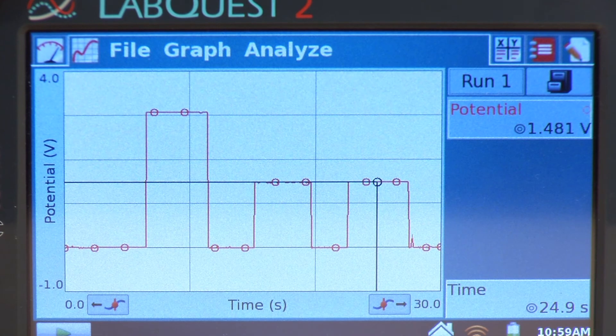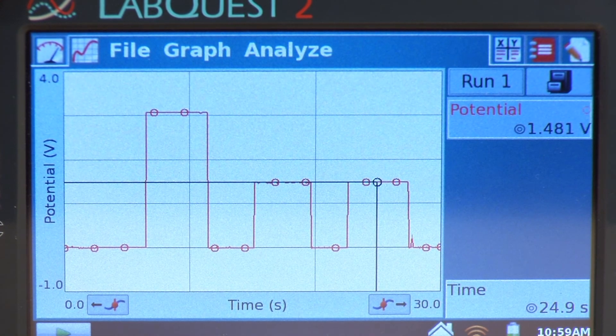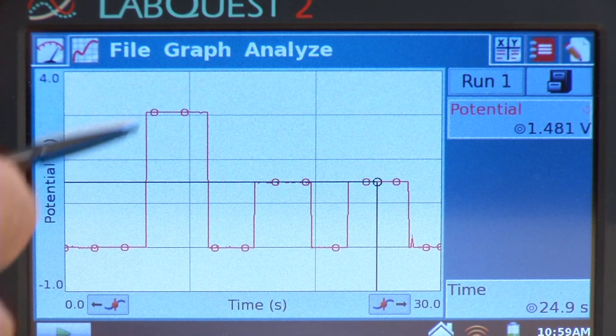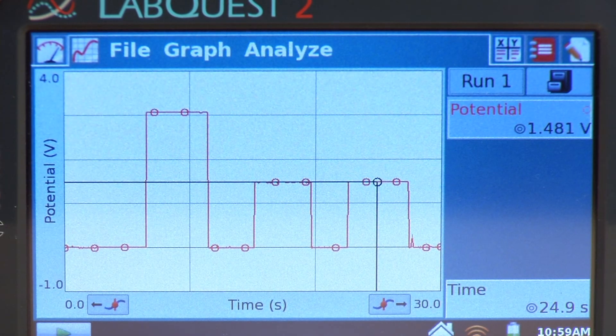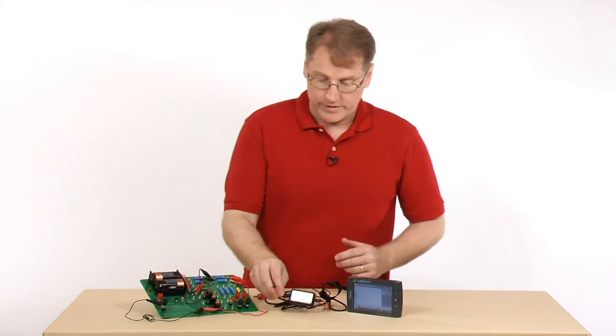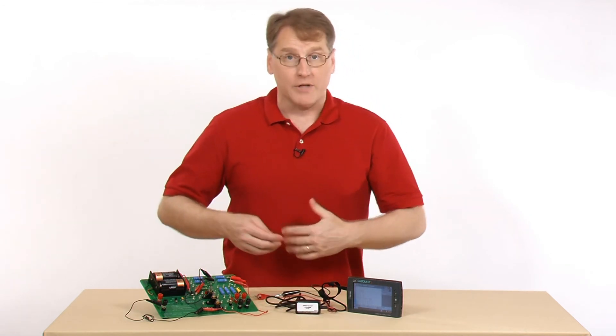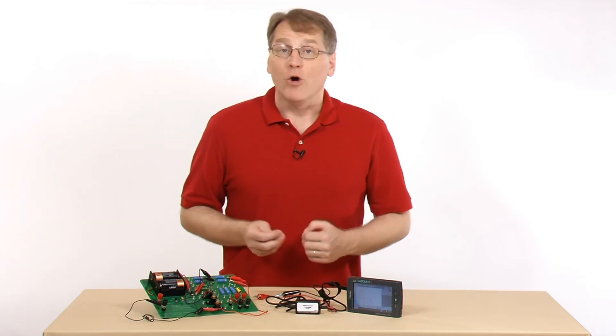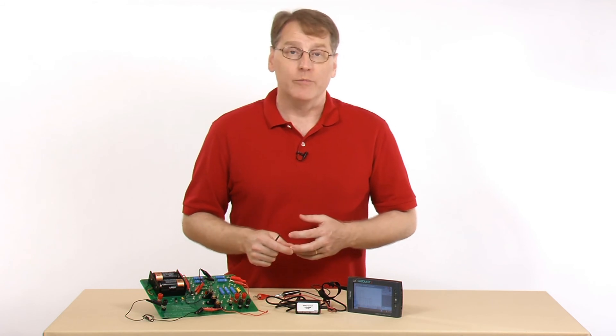So if I add 1.5 to 1.5, I get about 3. So the sum of the voltage drops do add up to the total drop across the circuit. You would use this sensor in labs like this, which might be an Ohm's Law lab, series and parallel circuit labs.